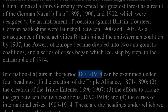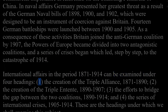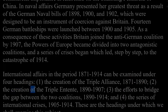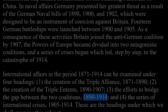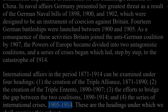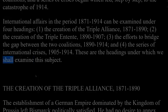International affairs in the period 1871 to 1914 can be examined under four headings: one, the creation of the Triple Alliance, 1871 to 1890; two, the creation of the Triple Entente, 1890 to 1907; three, the efforts to bridge the gap between the two coalitions, 1890 to 1914; and four, the series of international crises, 1905 to 1914.